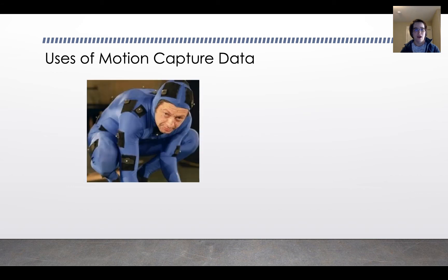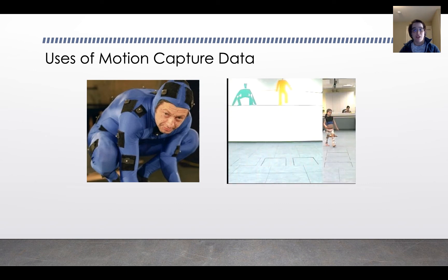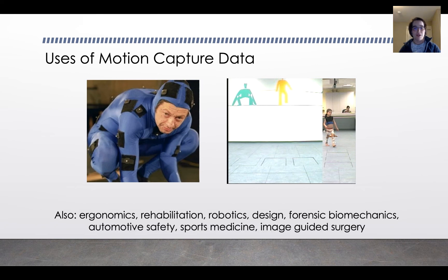So here's some different uses of motion capture data. One use is for animation. You might recognize Andy Serkis, who kind of famously popularized this with his role of Gollum in Lord of the Rings. It's been used much more extensively in recent years in movies. In terms of biomechanics, there are a lot of different applications. One is cerebral palsy patients, tracking motion of kids with abnormal gates and understanding what they do. Shriners hospitals do a lot of this kind of thing. There are also uses in ergonomics, rehabilitation, robotics design, forensic biomechanics, automotive safety, sports medicine, and image guided surgery. The George Fox PT school has a lab where they are using it for running analyses for people to help them improve their running gate mechanics, in addition to doing research studies.